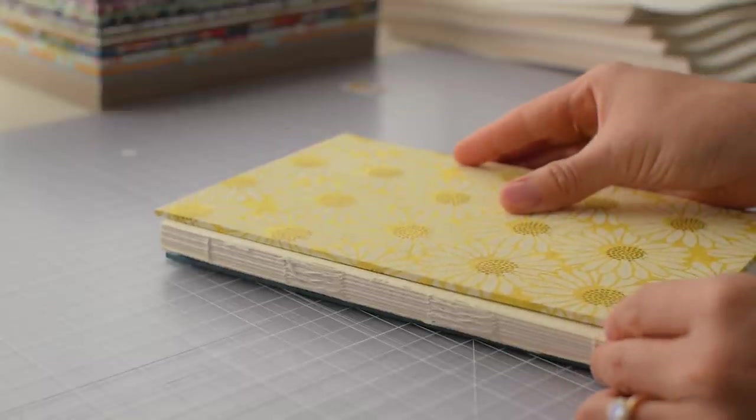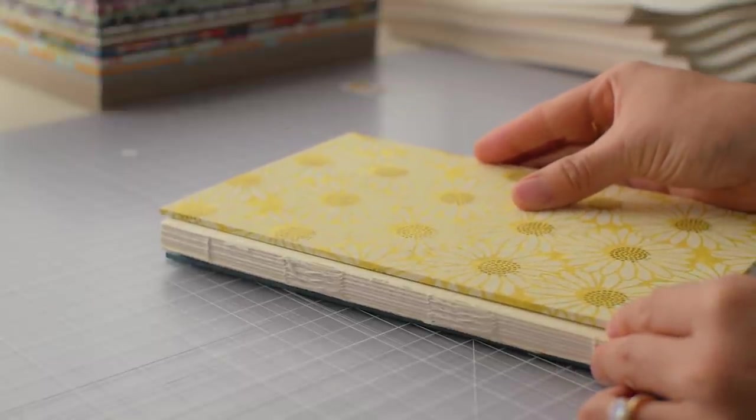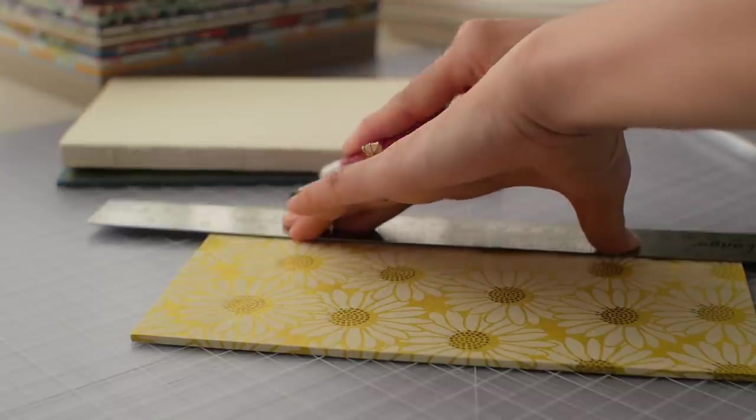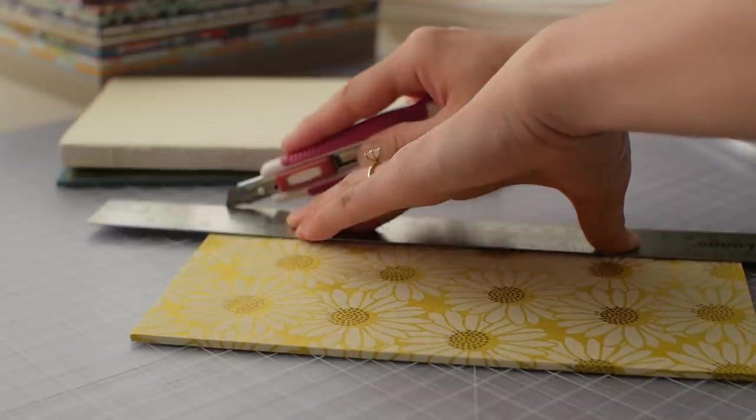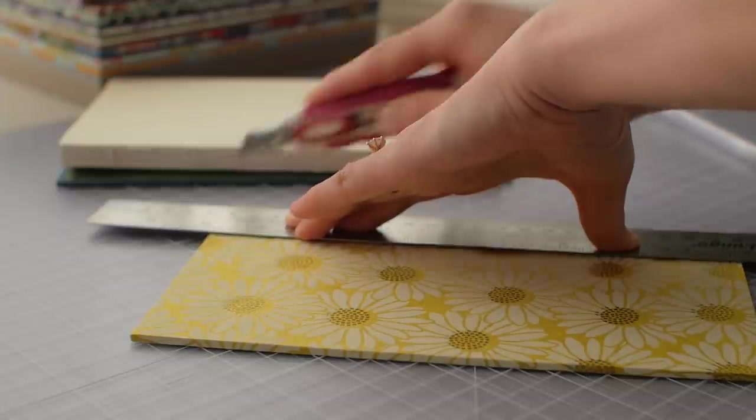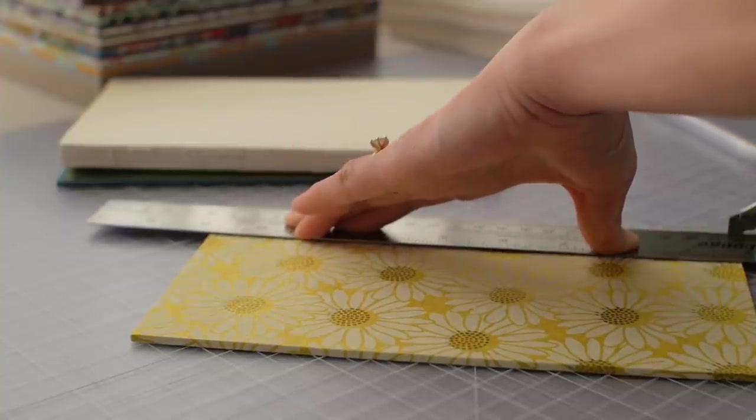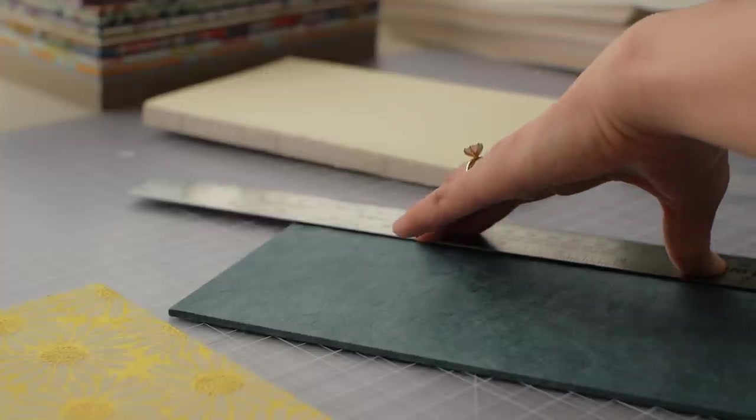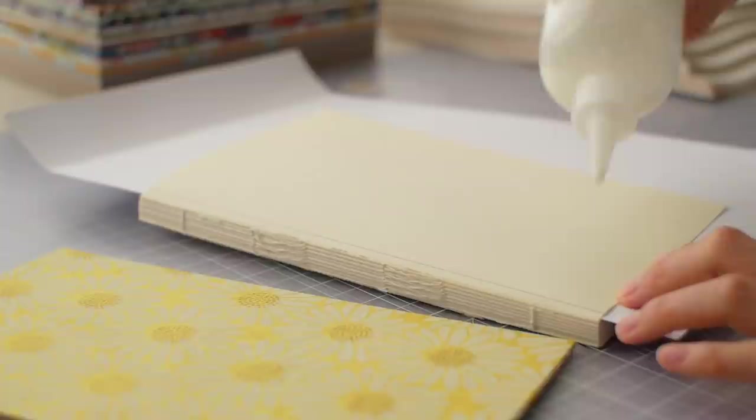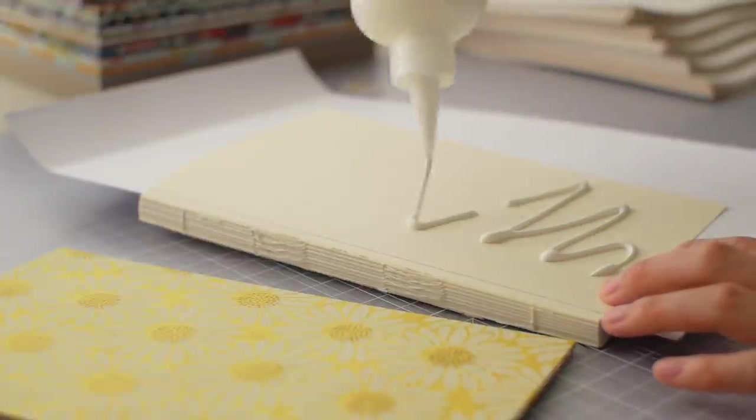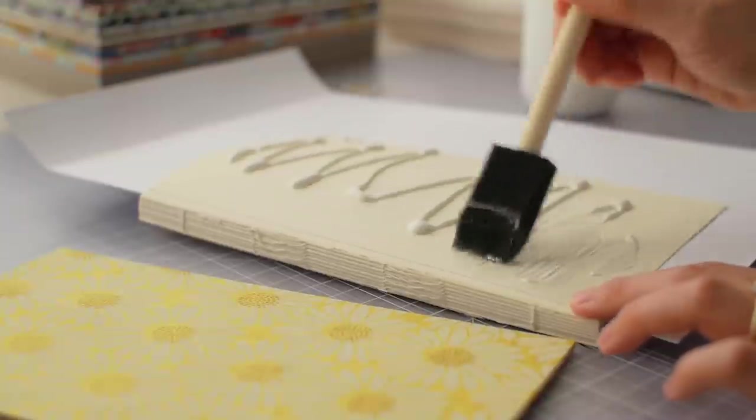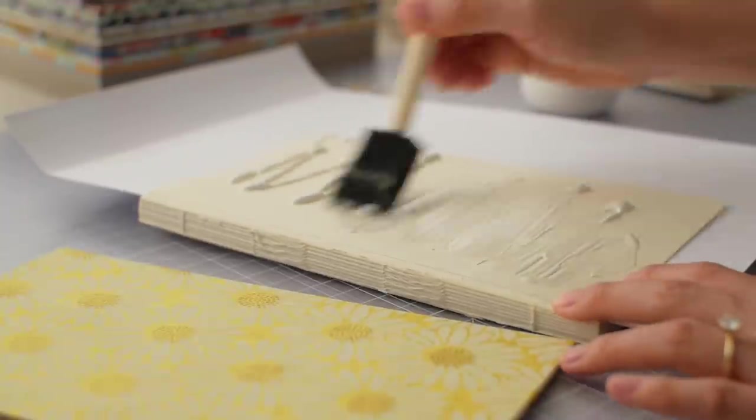A mistake I made was to prepare the covers before the text block because it ended up being the wrong size so I cut the width a little smaller. The top and bottom also should have been flush with the text block which I only noticed at the very end so the next time I try this binding I'm going to make the covers last.